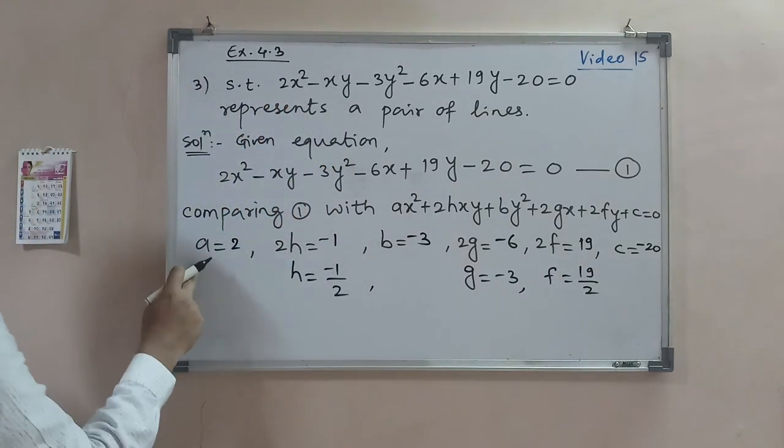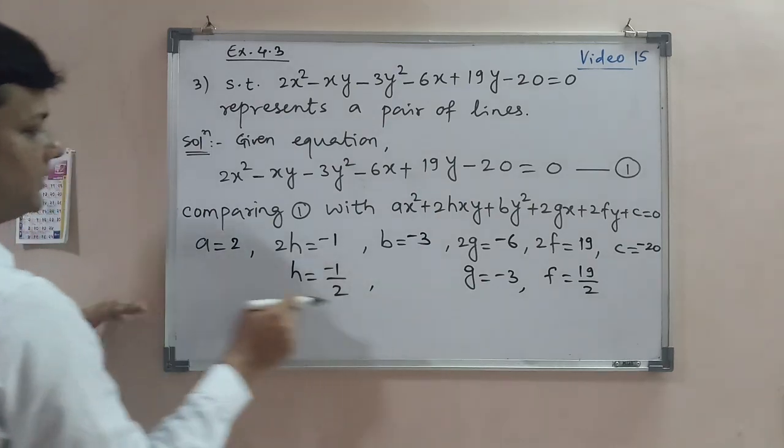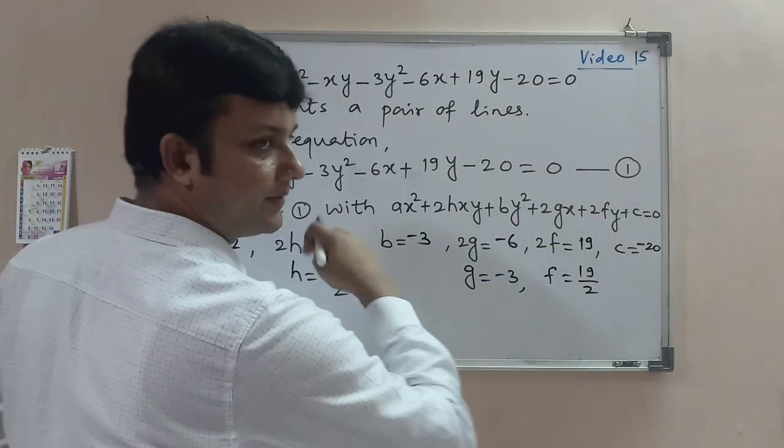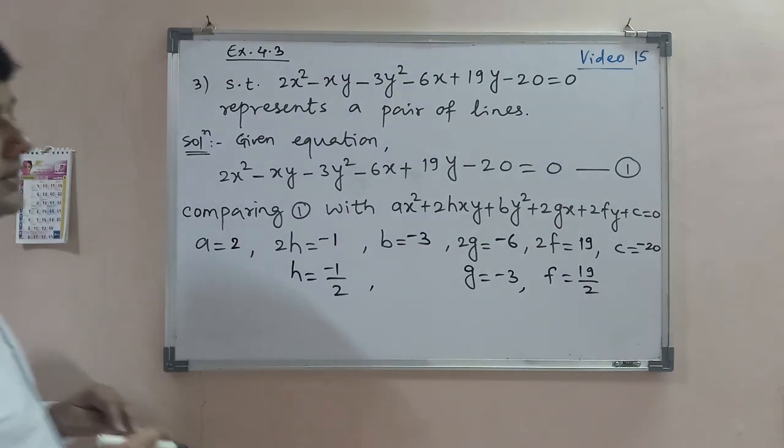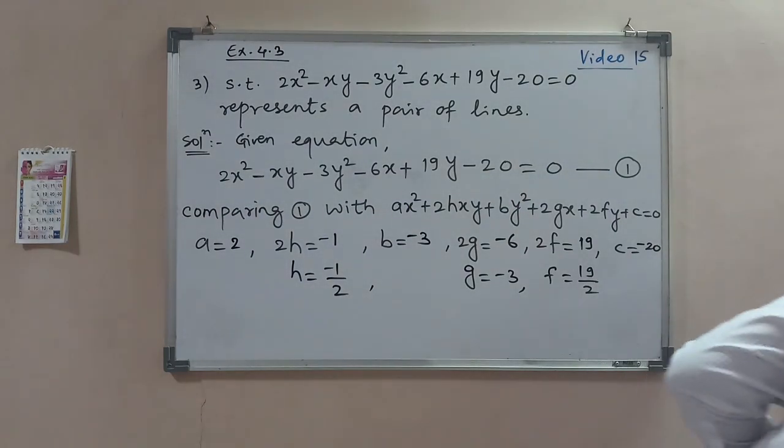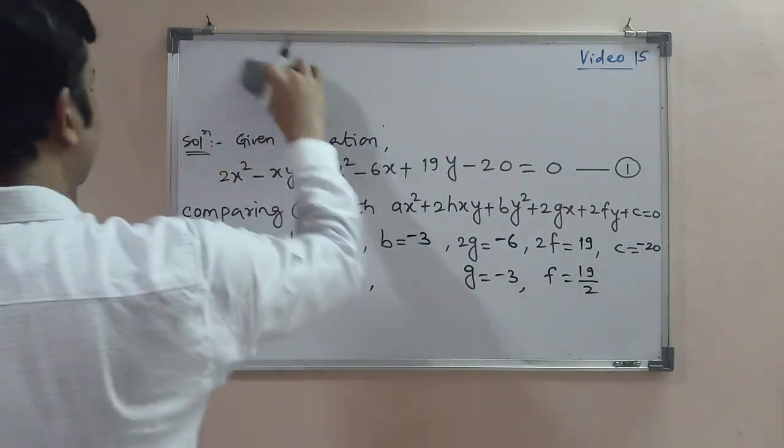Then we have a, b, c and f, g, h. a, b, c is above and f, g, h is below. Now let's consider the condition, the left-hand side.